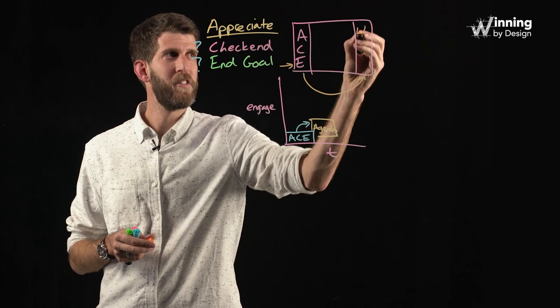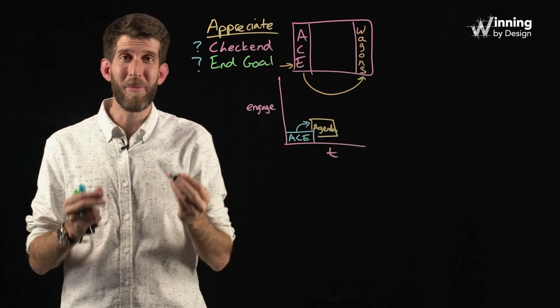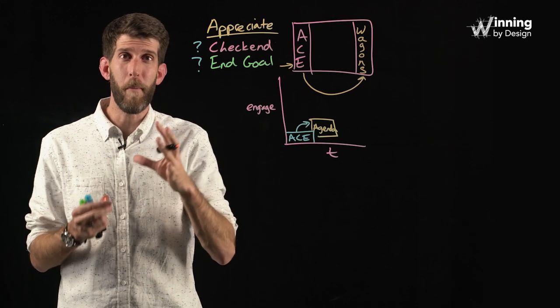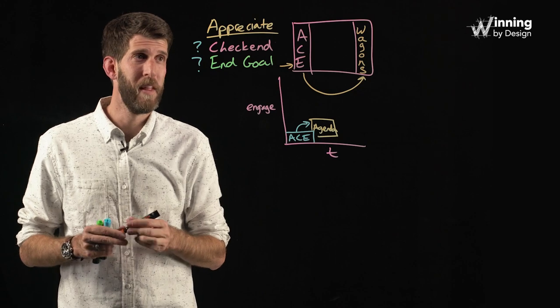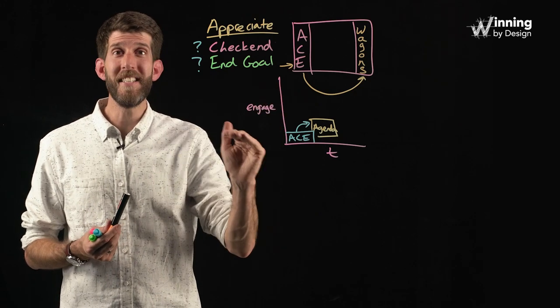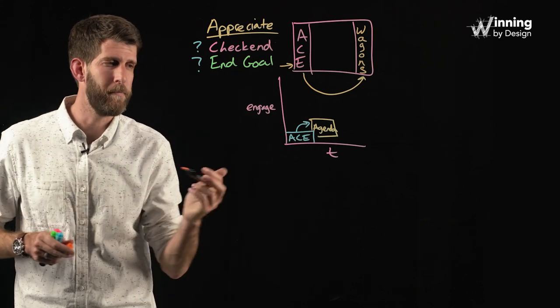And the final step is called connecting the wagons. And this is where we are able to set up what the next meeting looks like and why that's beneficial for your customer. So the end goal, one sentence. The agenda, three bullet points. So let's break down what the agenda looks like. The agenda is typically going to be something short and sweet.